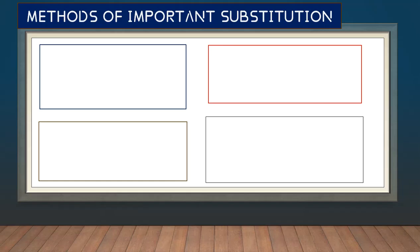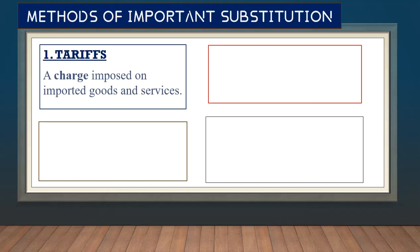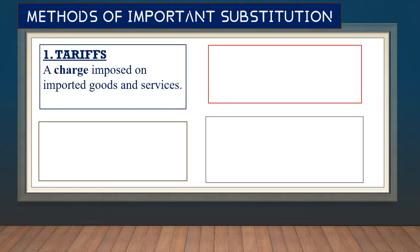There are four methods of import substitution. First, tariffs — a tariff is a charge imposed on imported goods and services. There are two types: specific tariffs, where you are charged according to the amount, size, or number of items imported; and ad valorem tariffs, where you are charged a percentage — for example, 10% of the value of the items you are importing.